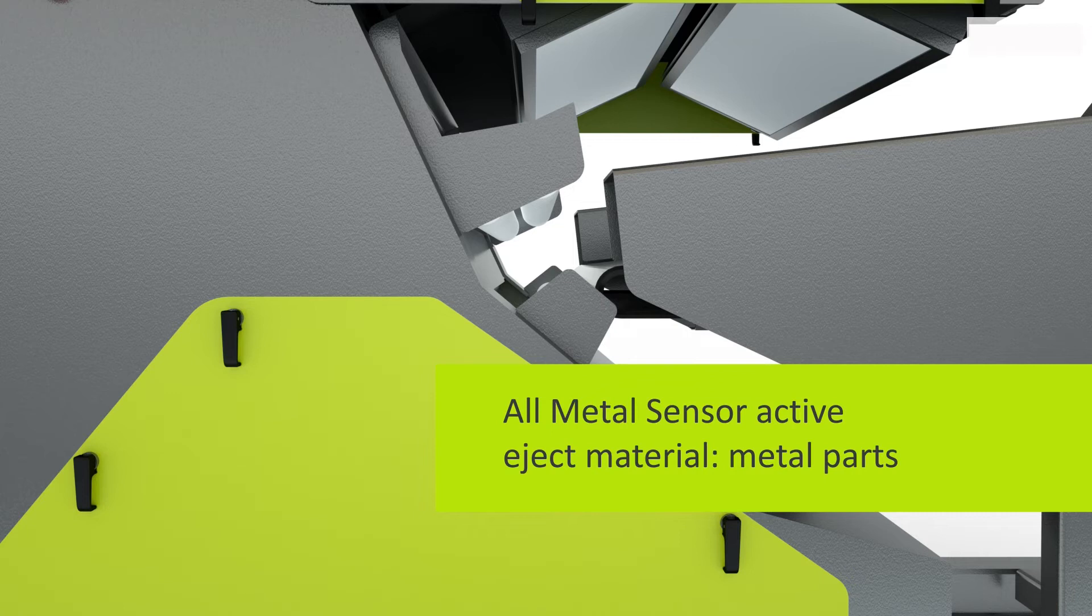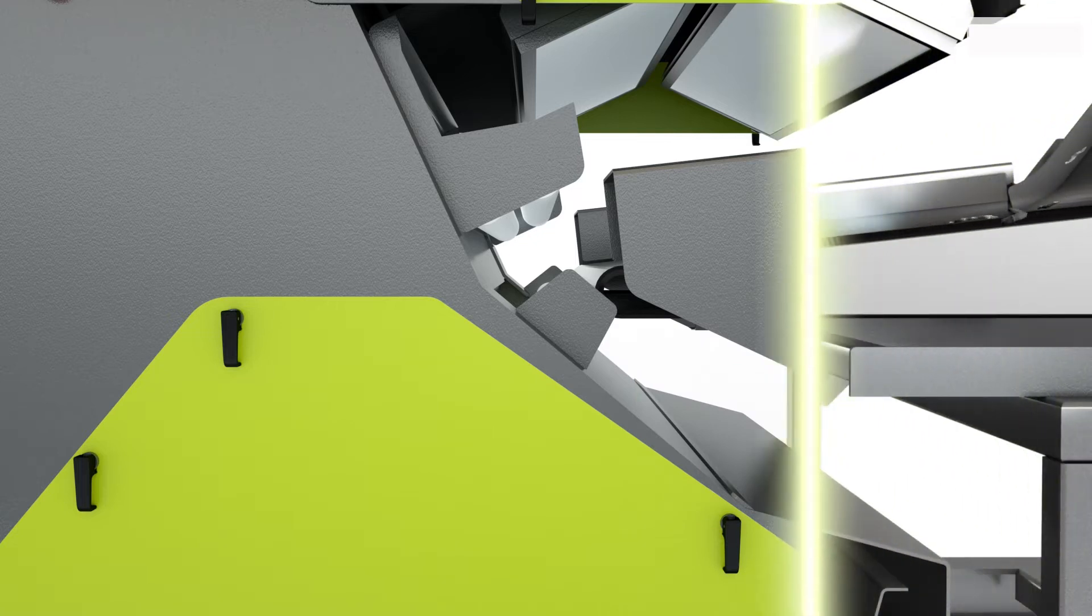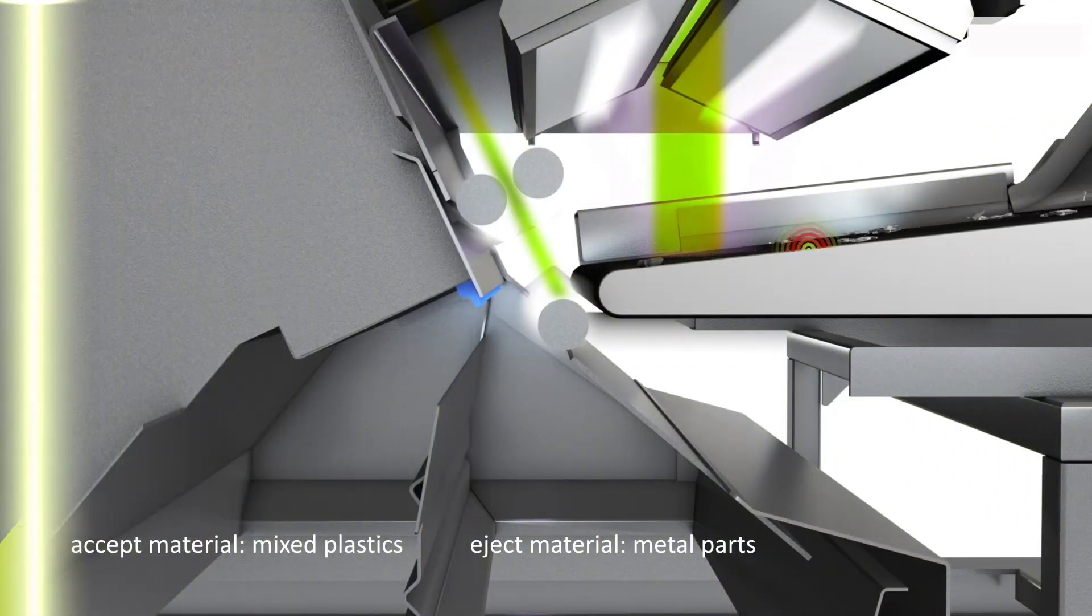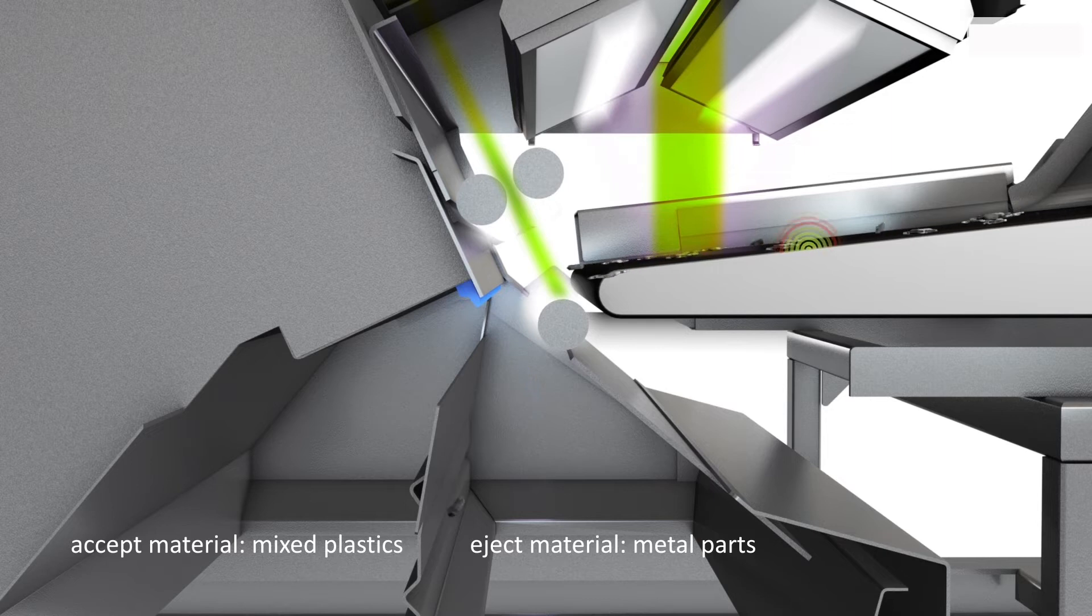Here we only use the all-metal detection coil and fire on all metals using the air ejection unit. This is mainly used to separate metals from plastics and other residue.